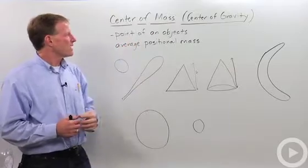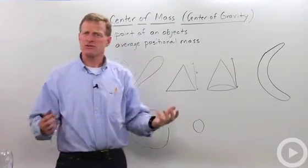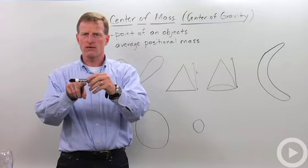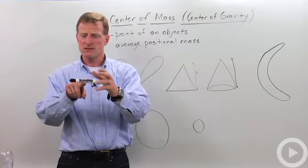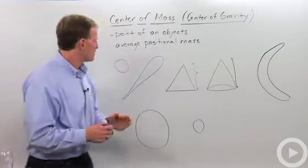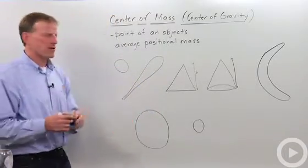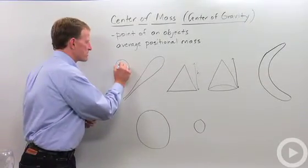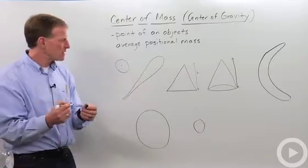What they are basically is the point of an object's average positional mass. So if you take an object and you can get it to balance, wherever that point is that it balances is the center of mass. Pretty straightforward. So for a ball, if I take a ball and throw it and it's spinning, it's going to spin around somewhere here in the center. That's pretty easy, right?